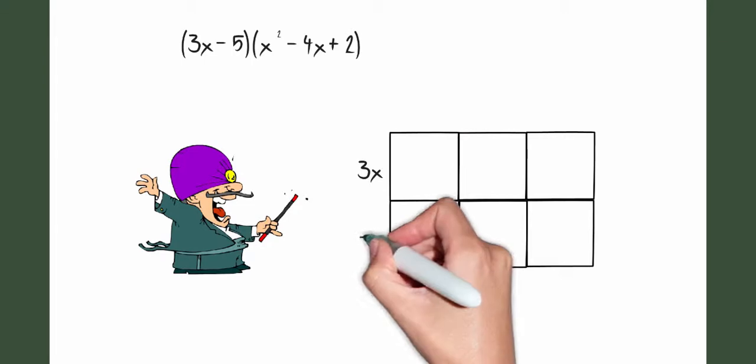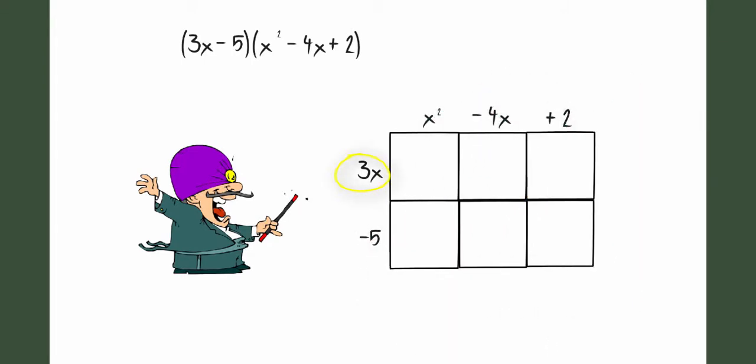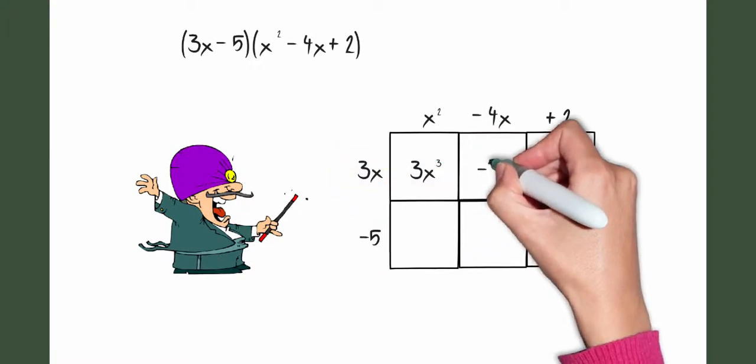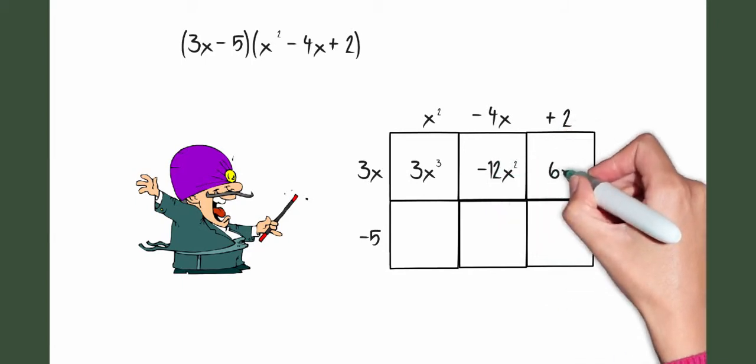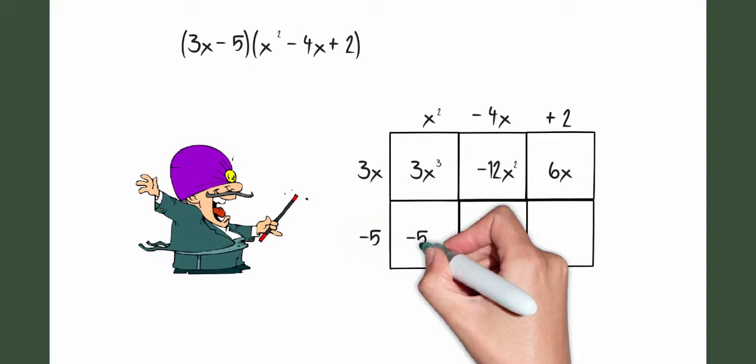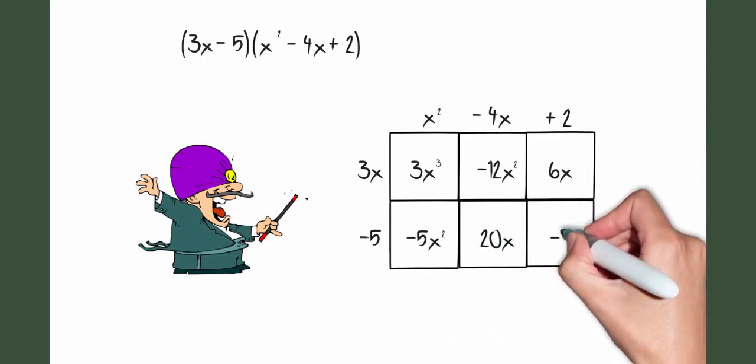First, I will be multiplying each term in x squared minus 4x plus 2 by 3x, and that would give me 3x to the third minus 12x squared plus 6x. Then I'm going to multiply my trinomial again by negative 5, and that would be negative 5x squared plus 20x minus 10.